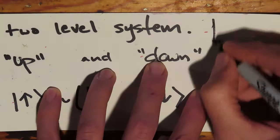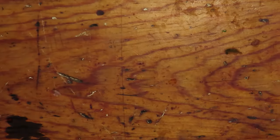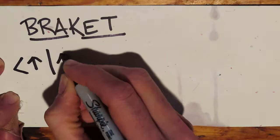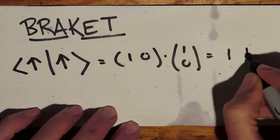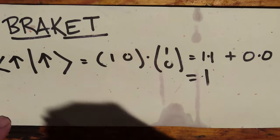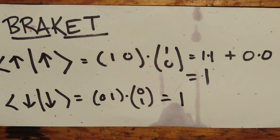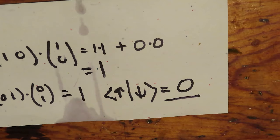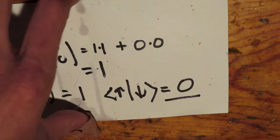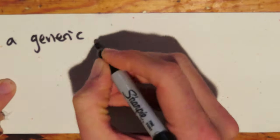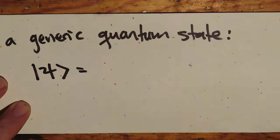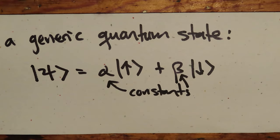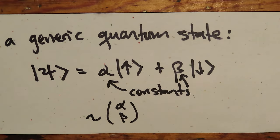These are specifically designed so we can take the inner or dot product between vectors — constructing the bracket. It's not hard to see that ⟨up|up⟩ = 1, and similarly ⟨down|down⟩ = 1, but ⟨up|down⟩ = ⟨down|up⟩ = 0. They are orthogonal vectors, which you should verify explicitly as an exercise. A generic physical state ψ is then a linear combination of up and down states: ψ = α|up⟩ + β|down⟩, where α and β are some constant numbers. This can alternatively be expressed as a column vector (α, β).